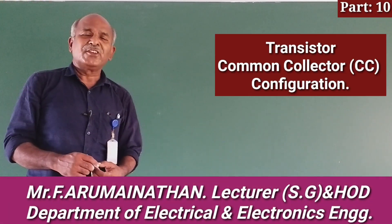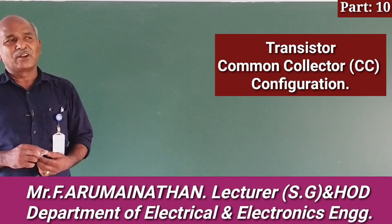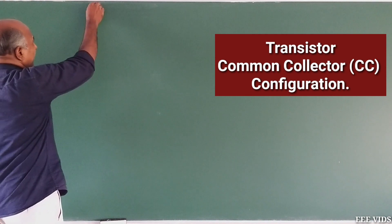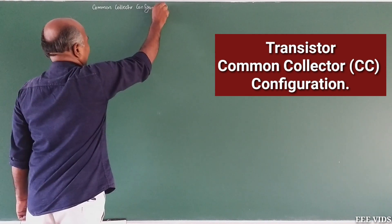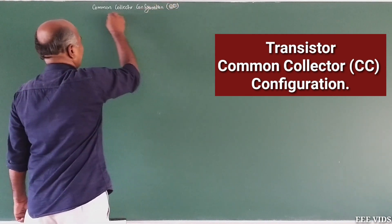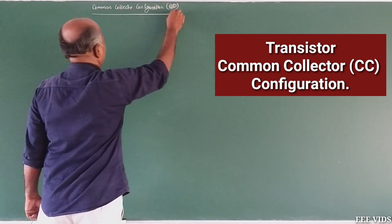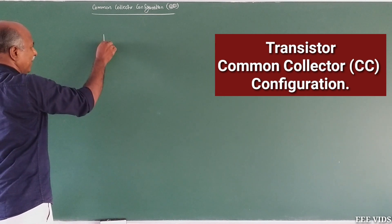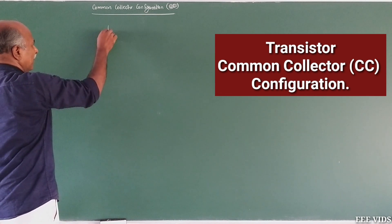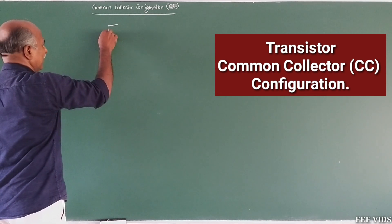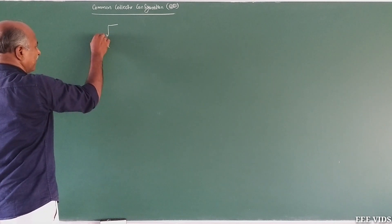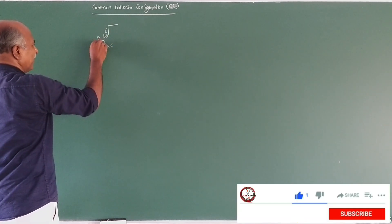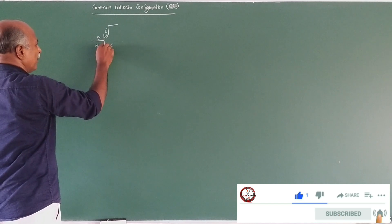Common collector configuration, also called CC configuration. Here the collector is common between input and output. The transistor has three terminals: emitter, base, and collector. This is an NPN transistor.